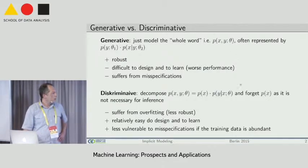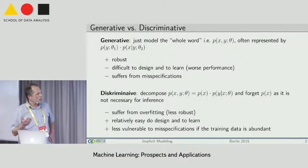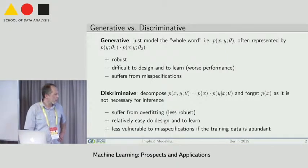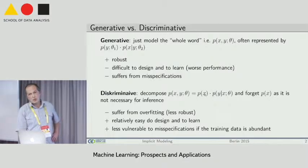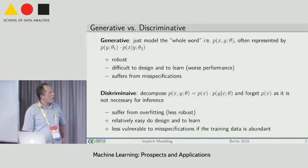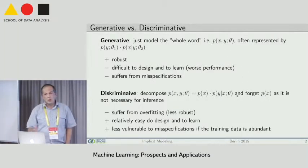In contrast, discriminative models are motivated by the fact that at the end, if we learn our model, what we need for inference is only the posterior probability distribution. The approach is just to decompose our joint into two constituents — prior for observation times posterior for hidden depending on observation — and just forget about p of x, since it's not interesting and not relevant for inference. Though in the generative case we model the whole world, in the discriminative case we model only what we need for inference.